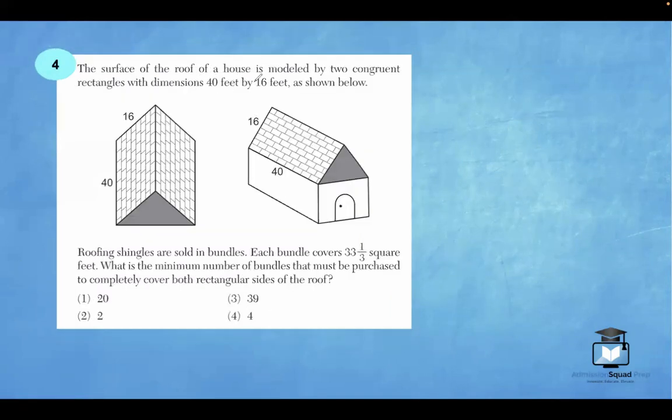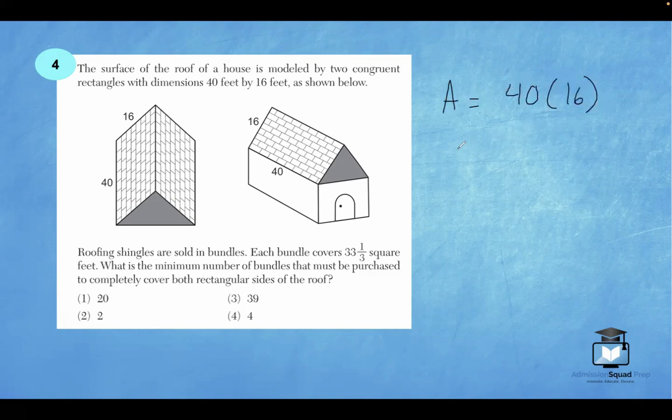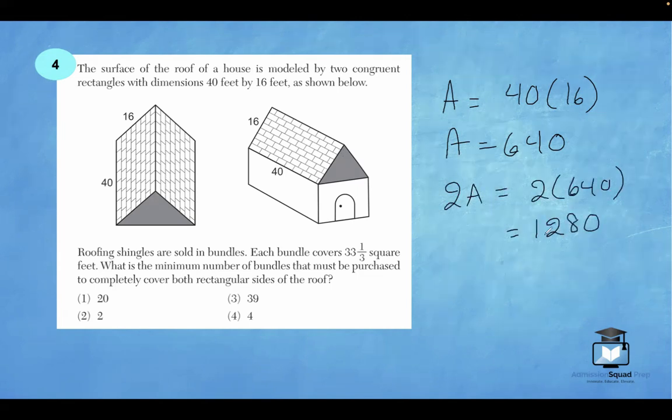Let's continue. Number 4. The surface of the roof of a house is modeled by two congruent rectangles with dimensions 40 by 16 feet, as shown below. These diagrams are just giving you two different perspectives. But as you can see, a roof of a house, you're going to have this part of the roof on the left and the part of the roof on the right. And the two rectangles are congruent. So to find the total area, we're going to multiply 40 by 16. That's going to be the area of one of the rectangles. That area is 640. But remember, there are two rectangles. So we're going to multiply A times 2. So now we have 1,280 square feet as the area of the two rectangles.